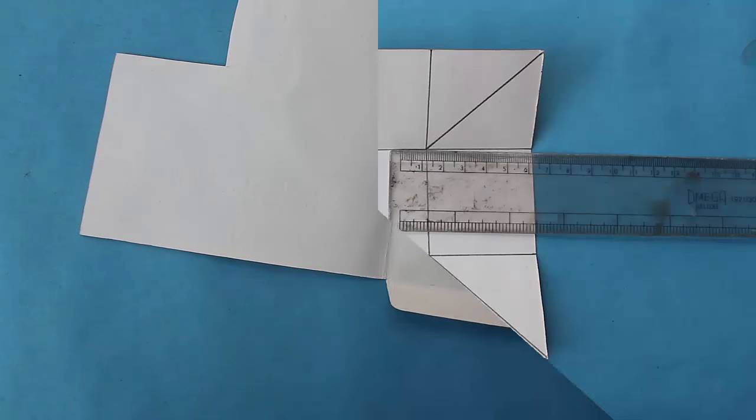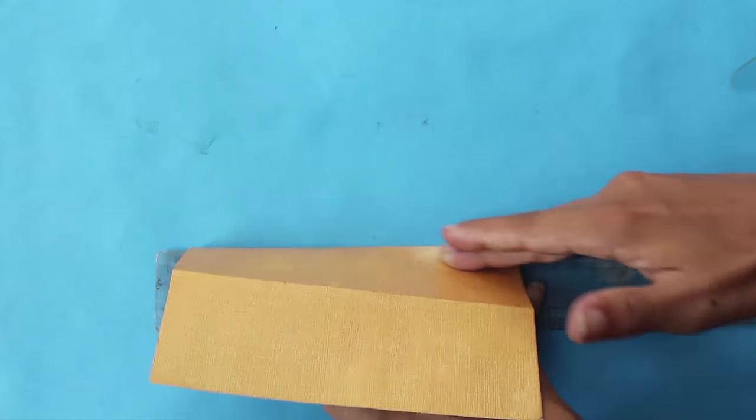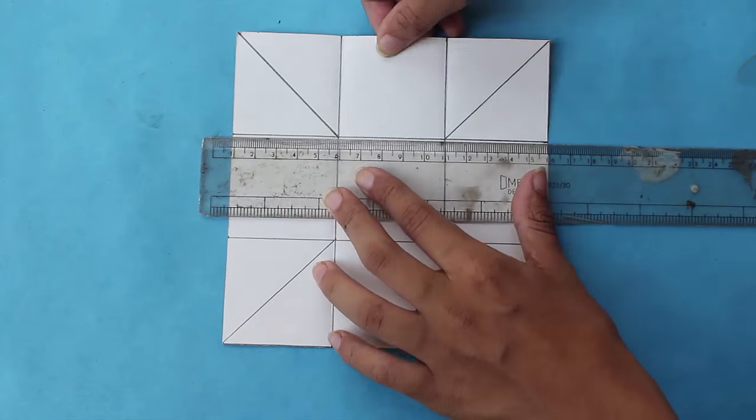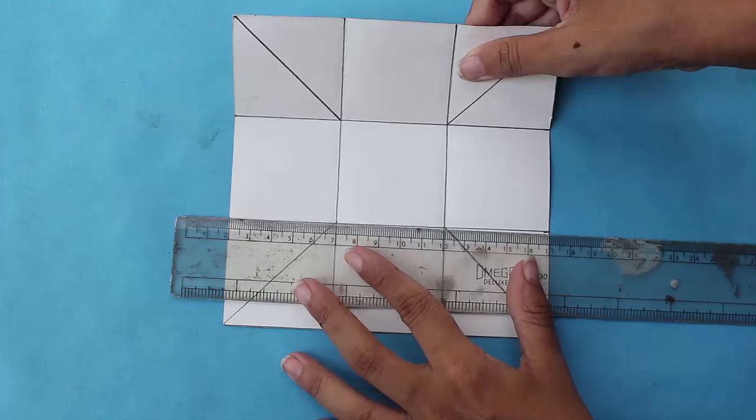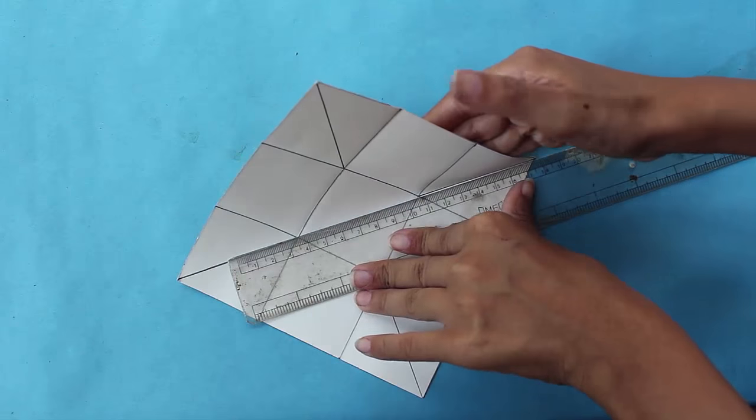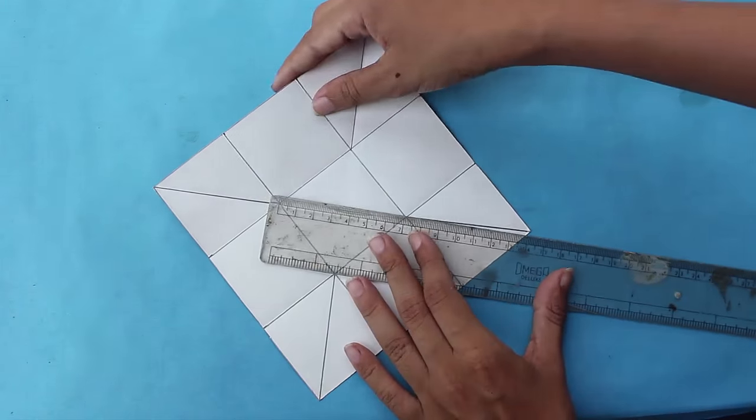Now you have to fold the small squares as shown. Now you have to fold the diagonals of the squares as shown.